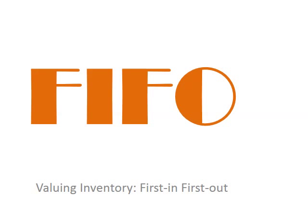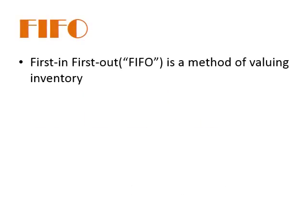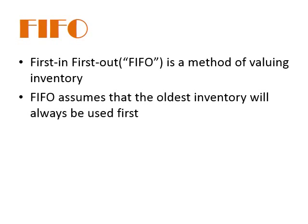In this session we're going to have a look at how we value inventory using the first in first out, or FIFO method. FIFO is one of the main methods of valuing inventory along with LIFO and AVCO. It stands for first in first out, and with FIFO we assume that the oldest inventory will always be used or sold first.